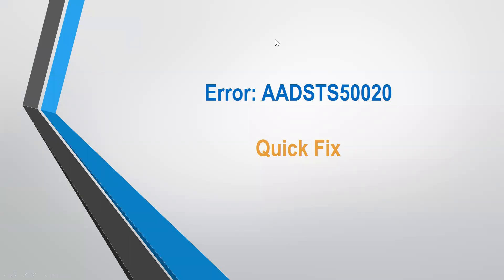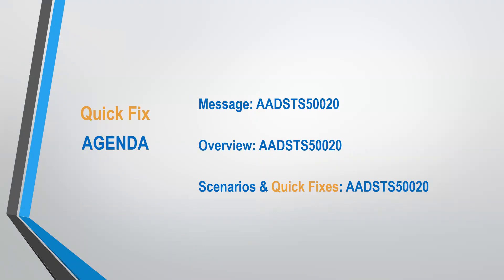Hi everyone and welcome to the Identity and Access Management Quick Fix channel. Today we will be looking at Azure Active Directory Security Token Service error 50020, which is an error message returned if a guest user from an identity provider tries to sign into a resource in Azure AD — preferably an application. Our agenda covers a clear overview of this error message, scenarios that can trigger it, and quick fixes.